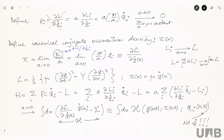Exactly as in the Lagrangian formulation for discrete systems, the Hamiltonian density depends on the field and the canonical conjugate momentum, and also the gradient with respect to the spatial components of the field, and maybe also the canonical conjugate momentum — but never, never the time derivative of the field. Because the time derivative of the field is supposed to be written in terms of the canonical conjugate momentum by inverting the relation.